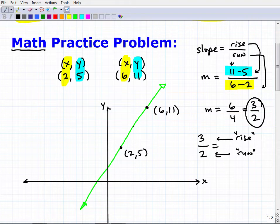Okay, now what does that mean? Well, for every 2 it goes out. The run is how much a line goes from left to right. This is the run. And then the rise is how much a line goes up or down. So let's see how this works.